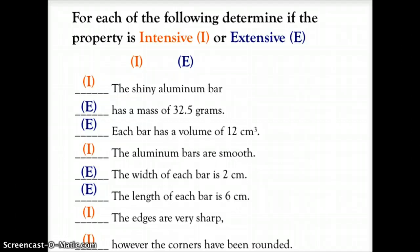The aluminum bars are smooth, that's more descriptive, that's a quality, so we're talking about an intensive property. The width of each bar is two centimeters and the length of each bar is six centimeters—those both are measurable numeric values, both extensive. The edges are very sharp and the corners have been rounded, so the edges being sharp and the corners being rounded are both intensive properties.